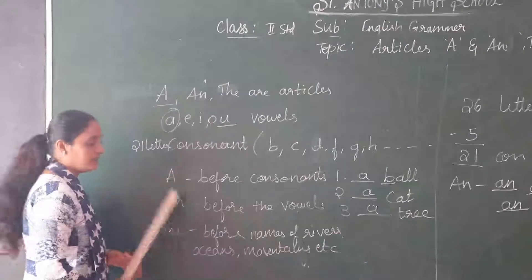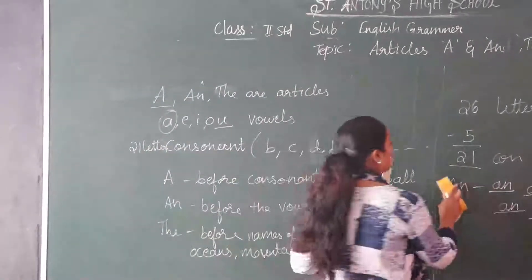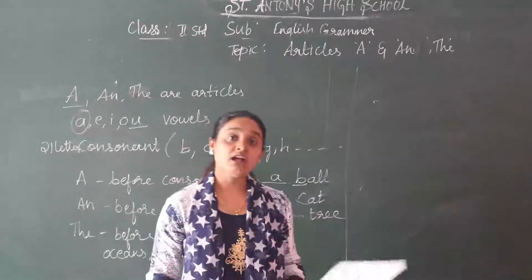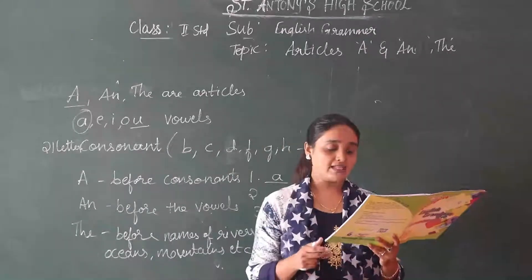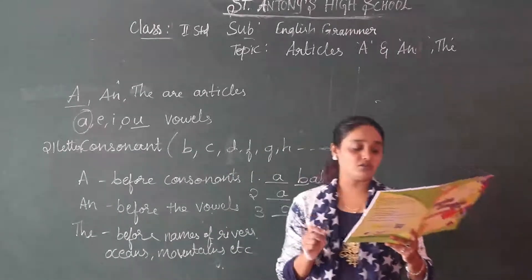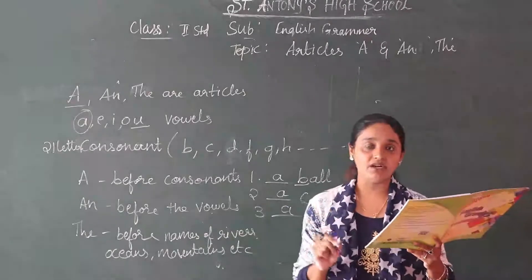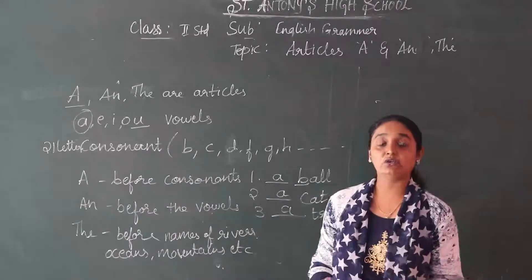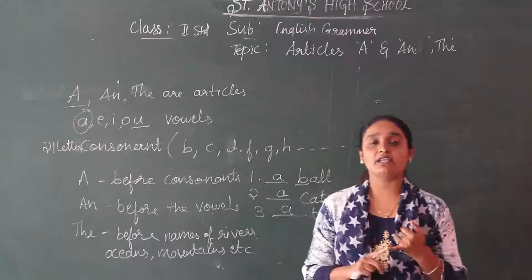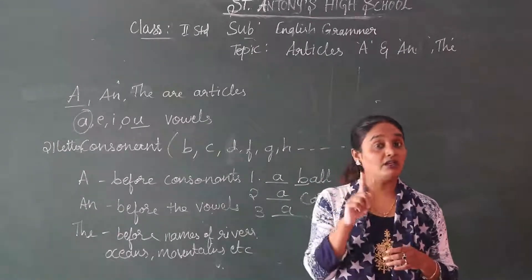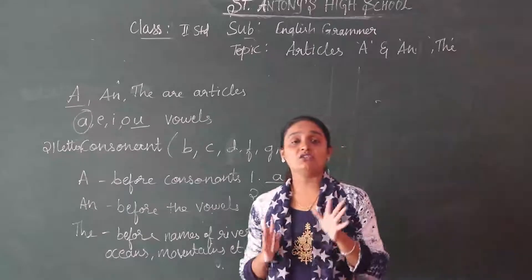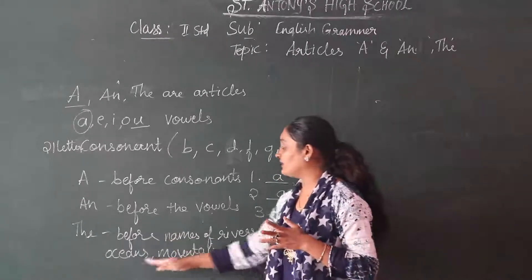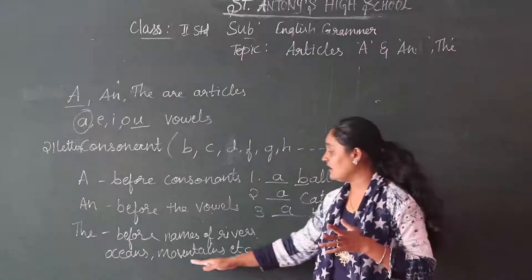Shall I move on? That is THE. So we saw A is used before consonants, AN is used before vowels. What is pending? THE is pending. So how are you going to use THE? THE comes before a specific or unique noun — it is used before the names of rivers, mountains, oceans, monuments, and holy books, and unique objects.